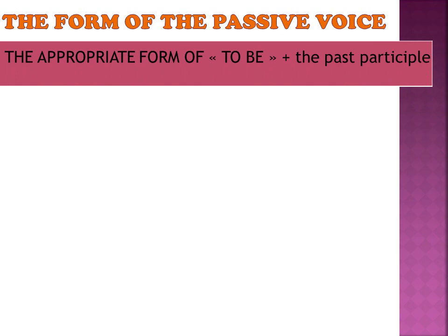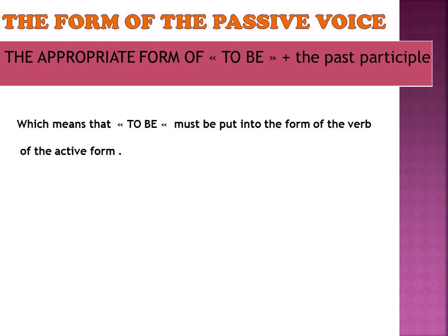The form of the passive voice is easy: it is the appropriate form of 'to be' plus the past participle. The verb 'to be' must be put in the same tense as the verb in the active form. If the verb is in simple present, 'to be' must be in simple present; if the verb is in simple past, 'to be' must be in simple past, and so on.